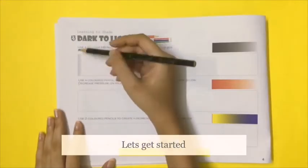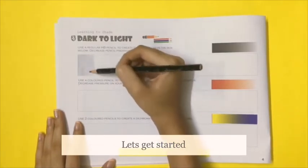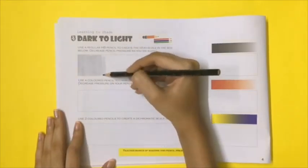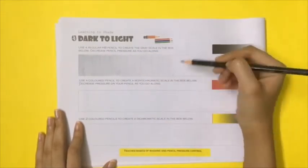Let's get started. In the first box, use a regular HB pencil to create a gray scale going from dark to light. Decrease pencil intensity to go lighter.